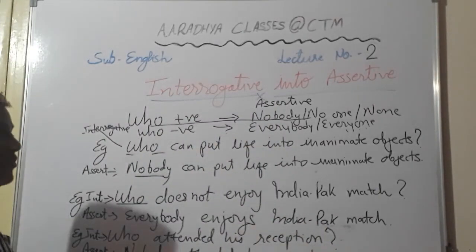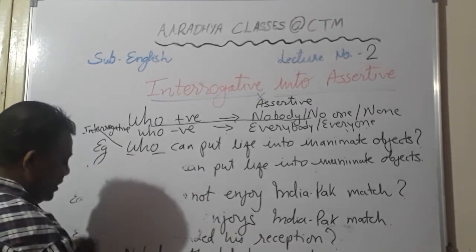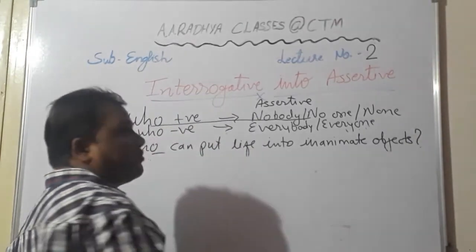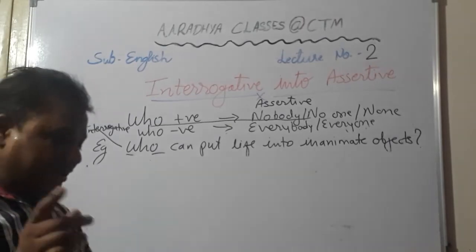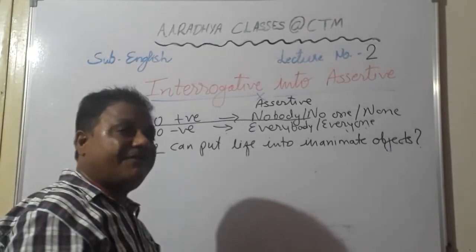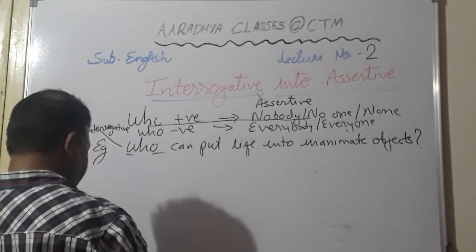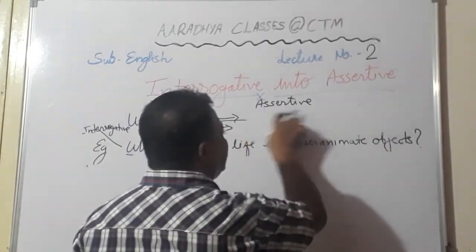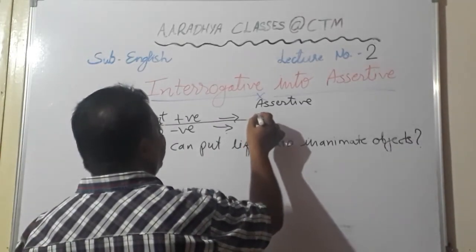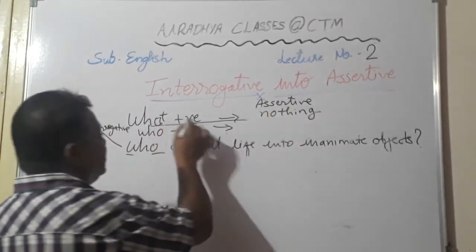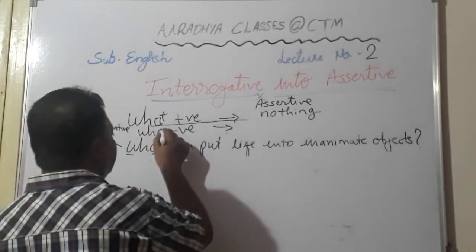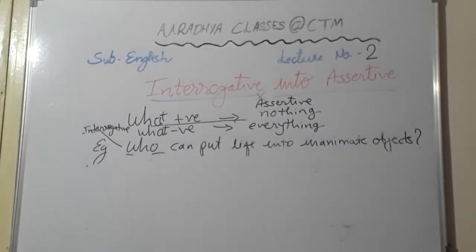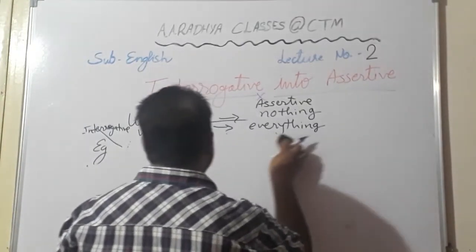Now that who questions are covered, let's move to the 'what' question. In who questions, the subject of the sentence is not given. In what questions, the object is not given. So at the place of object — where 'what' is — we will write 'nothing' or 'everything.' When the what question is positive, we write 'nothing.' When the what question is negative, we write 'everything.' Just don't change the tense.